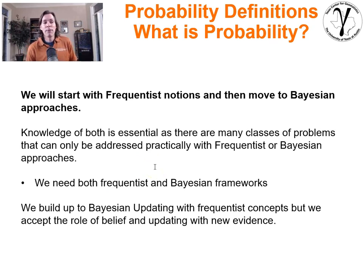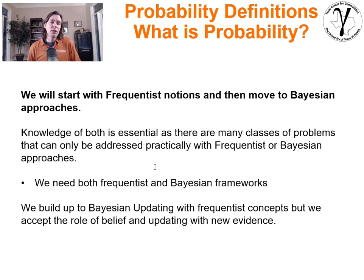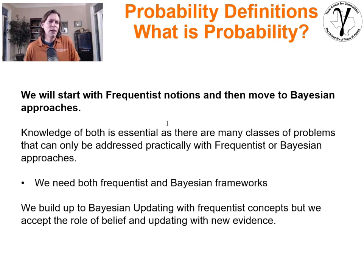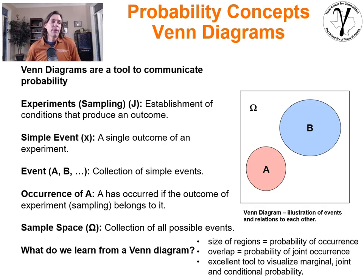Having in your toolkit both frequentist and Bayesian methodologies for probability is a very powerful combination. We will outline different types of problems that can be solved very well with Bayesian methodologies but would be quite difficult, if not impossible, with standard frequentist approaches. If we're going to talk about probability, a very useful vehicle for communicating it is the concept of a Venn diagram.